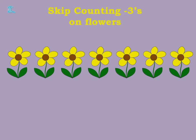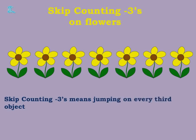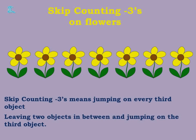Now let's learn Skip Counting by Threes with the help of these beautiful flowers. Skip Counting by Threes means jumping on every third object — whatever the object may be. That is, leaving two objects in between and jumping on to the third object.